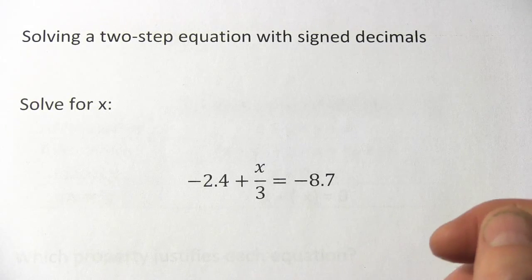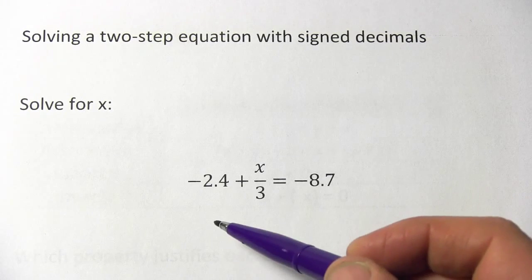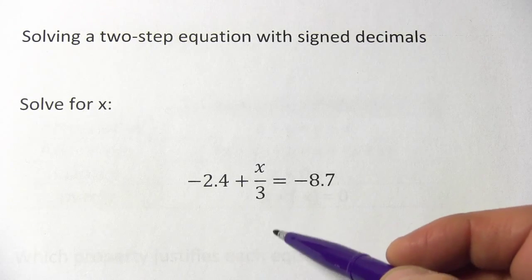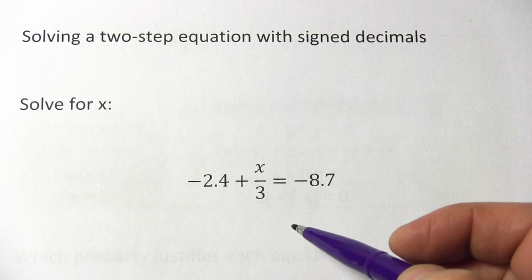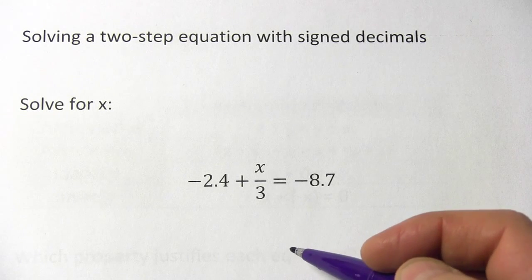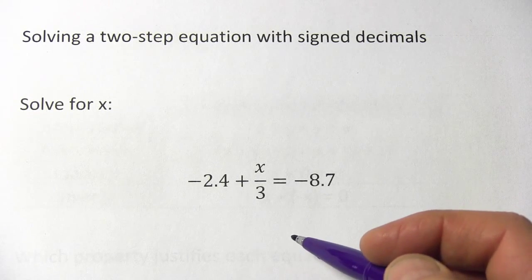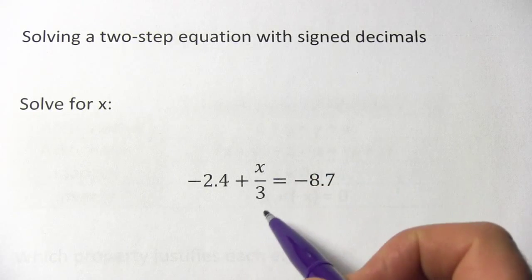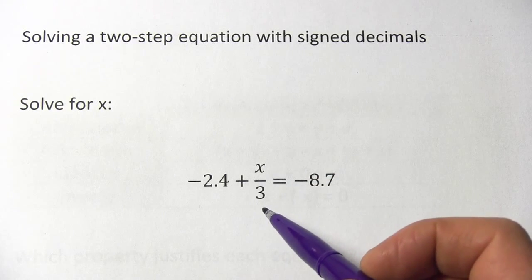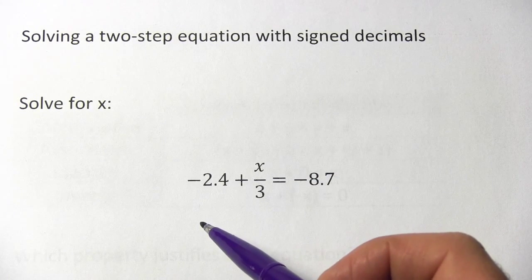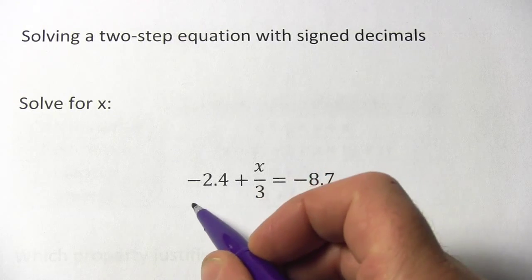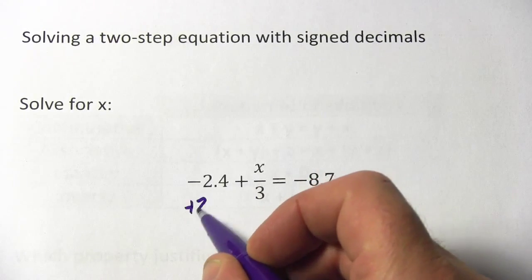In this problem we need to solve for x and we've got decimals, we've got x on the top of a fraction, all kinds of stuff going on here. So how should we approach this? Well, first I want the x term alone on one side, so I'm going to try to get rid of this negative 2.4, and that's easily enough done.